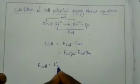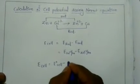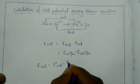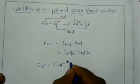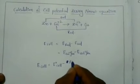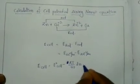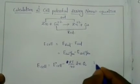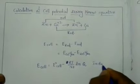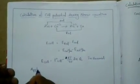But we have to calculate electrode potential using the Nernst equation. The Nernst equation in general is: E cell equals E⁰ cell minus RT by nF times ln Q. This is the general Nernst equation.